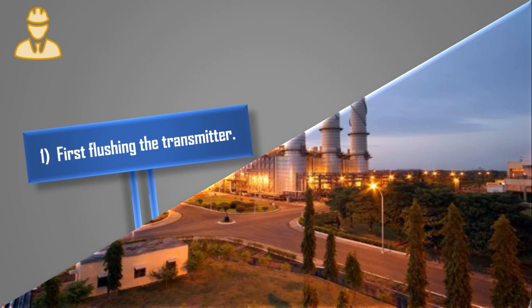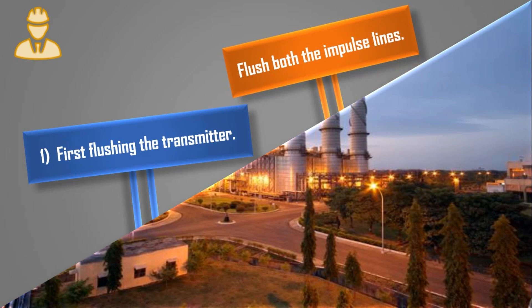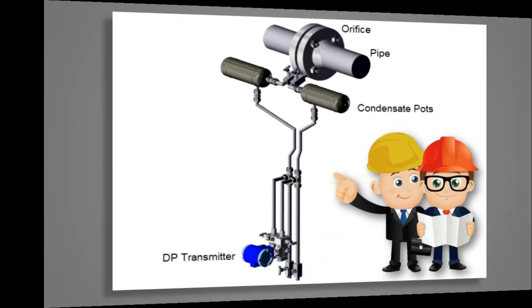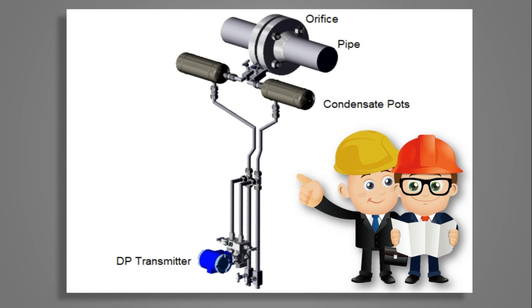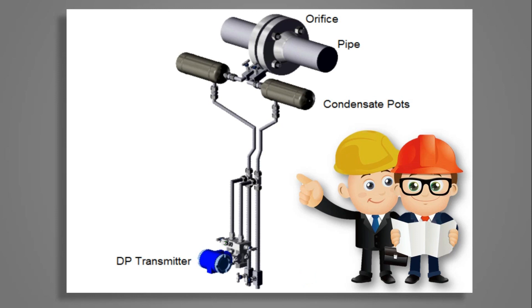The first step is flushing the transmitter — flush both the impulse lines. Impulse lines are the lines that connect the transmitter to the process. The DP transmitter is connected to the process using impulse lines, as shown in the picture. These steps are used to flush the impulse lines. Note that during flushing, the transmitter may show incorrect readings.